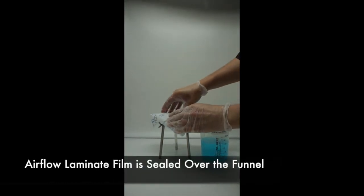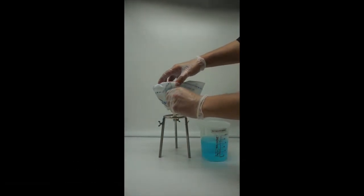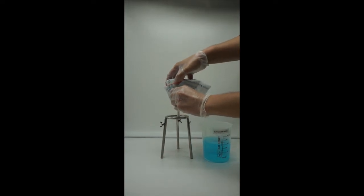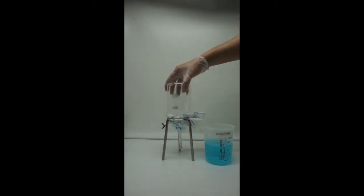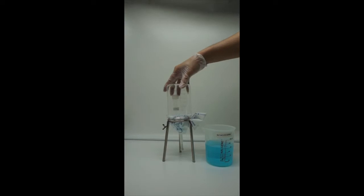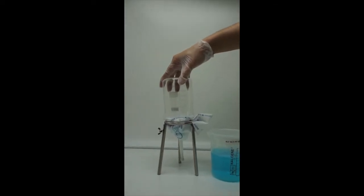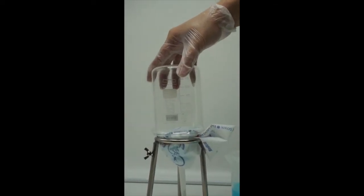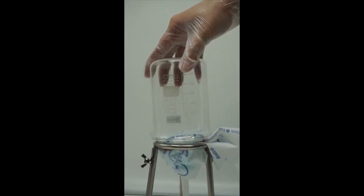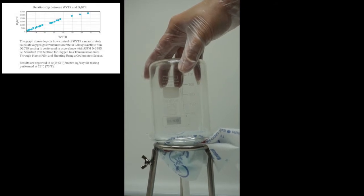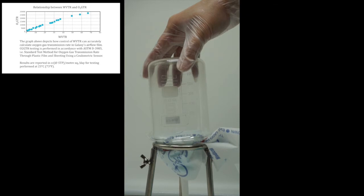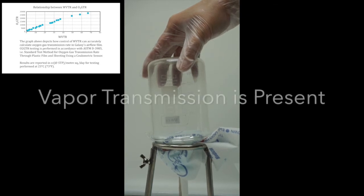Galaxy's airflow is sealed over the funnel opening. A beaker is placed over the top of the funnel to test if condensation occurs. As we can see, condensation builds up proving moisture vapor transmission is present.